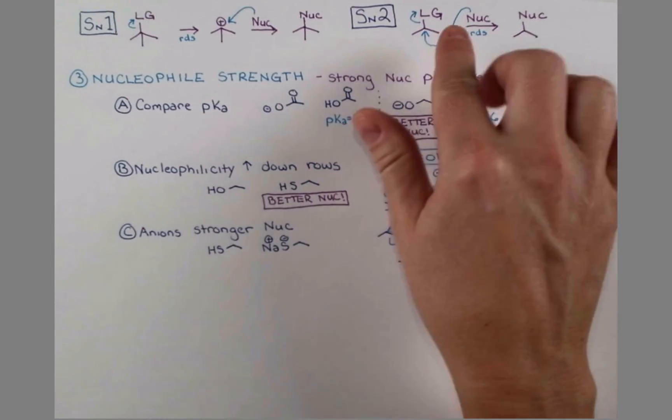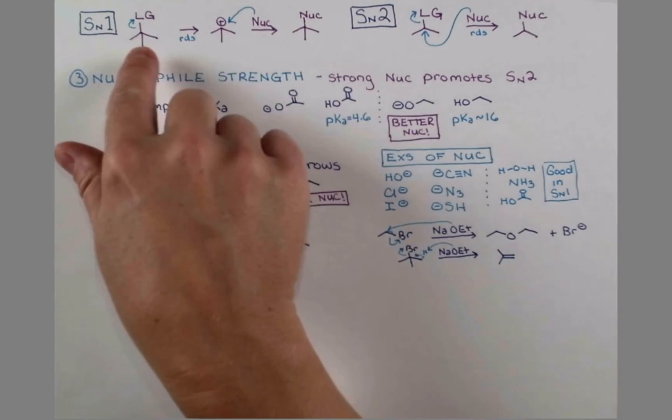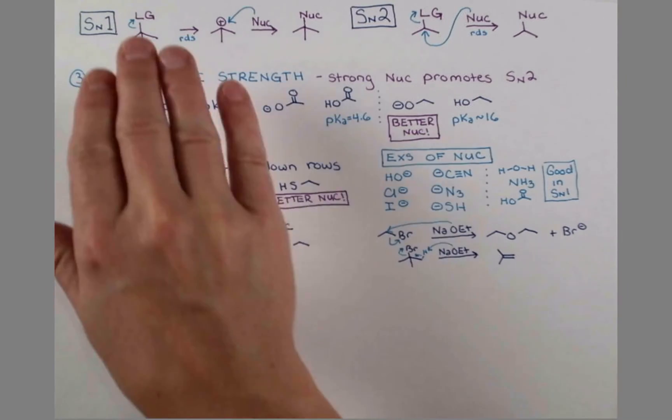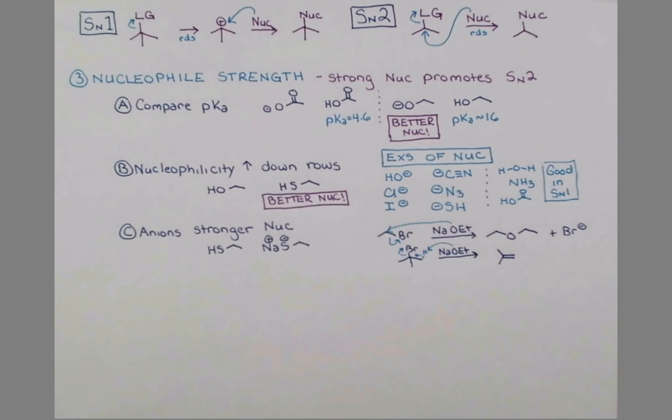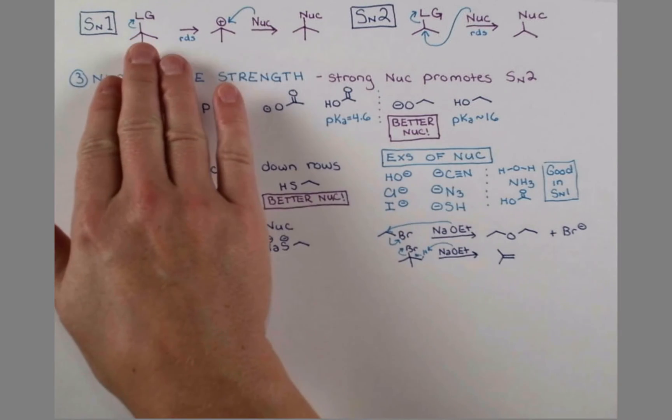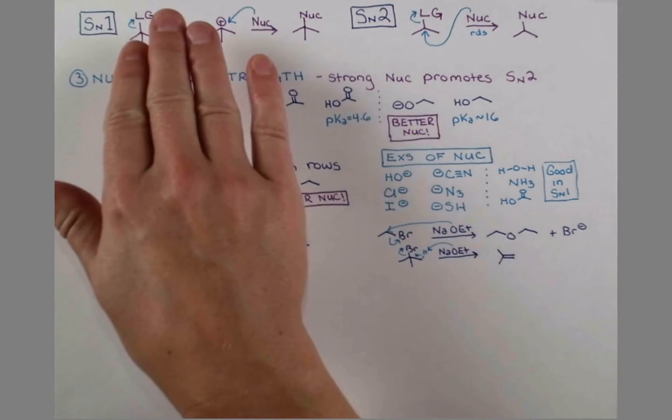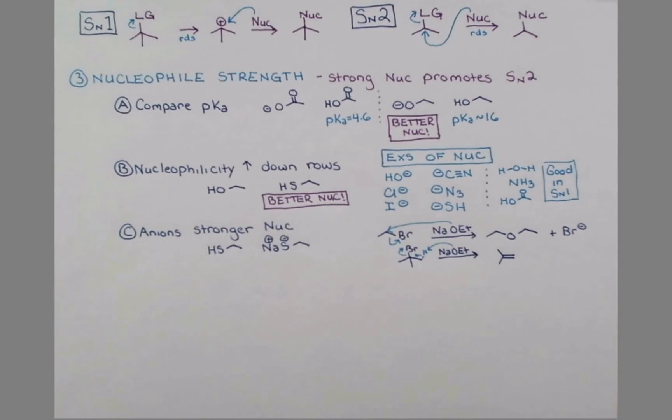Both of these reactions require a leaving group to leave, whether it leaves on its own, or leaves because it's pushed off of the molecule. So we need to make sure that the group we have on here is actually a good leaving group. And of course SN1 reactions are going to be a little bit more sensitive to leaving group ability, but both of these reactions do require a good leaving group. We'll find that the best leaving groups are conjugate bases of strong acids.